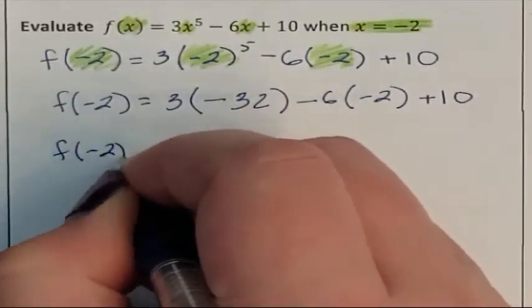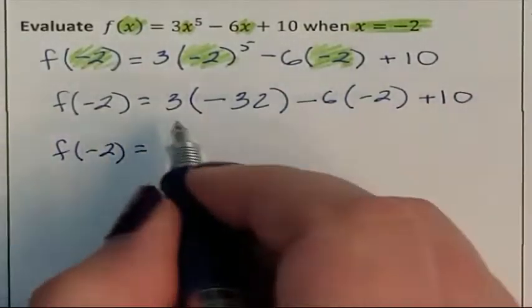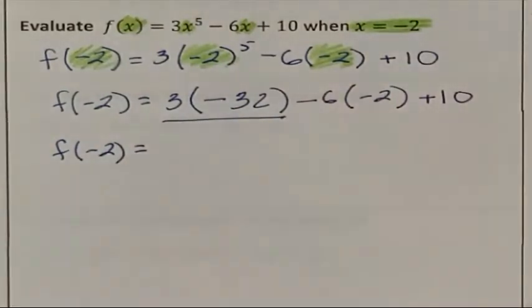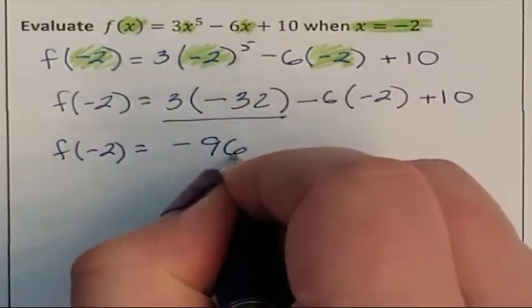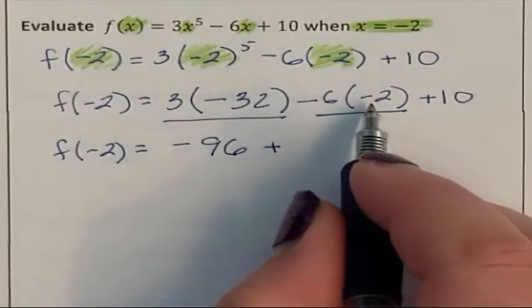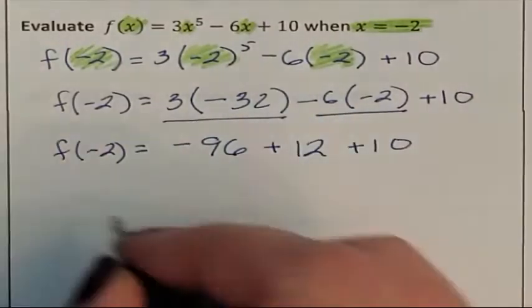Now order of operations say I need to go through and multiply. So 3 times negative 32 is a negative 96. Negative 6 times negative 2 is a positive 12. That was the last multiplication.